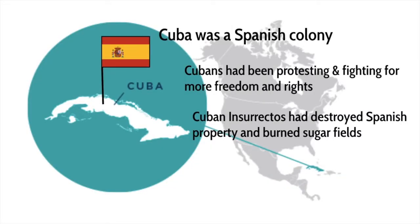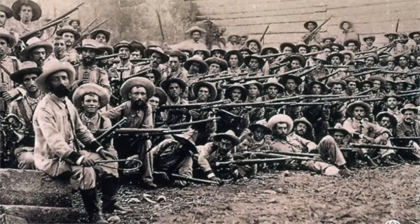What really sparks the war between America and Spain in 1898 is the island of Cuba. Cuba was a Spanish colony, one of the few colonies that Spain had left. The Spanish Empire had basically been falling apart throughout the 1800s and was on its last legs. The Cuban people had been protesting and fighting for their freedom and their rights since about the 1850s or so, and by 1898 things had really come to a head.